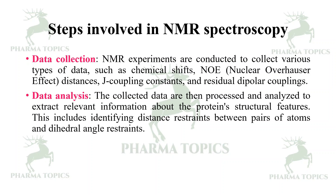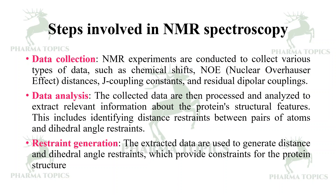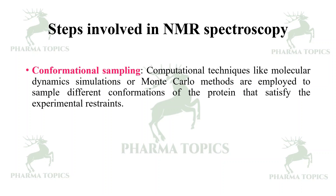In data analysis, the collected data are processed and analyzed to extract relevant information about the protein's structural features, including identifying distance restraints between pairs of atoms and dihedral angle restraints. In restraint generation, the extracted data are used to generate distance and dihedral angle restraints which provide constraints for the protein structure. Next, in conformational sampling, computational techniques like molecular dynamic simulations or Monte Carlo methods are employed to sample different conformations of the protein that satisfy the experimental restraints.